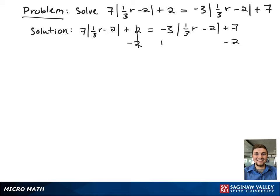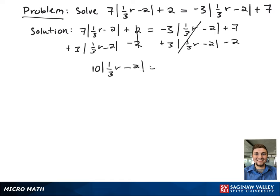We begin by subtracting 2 from both sides to eliminate the constant on the left. We also add 3 times the absolute value of one-third r minus 2 to both sides to eliminate the absolute value term on the right. This gives 10 times the absolute value of one-third r minus 2 equals 5. Dividing both sides by 10, we get the absolute value of one-third r minus 2 equals one-half.